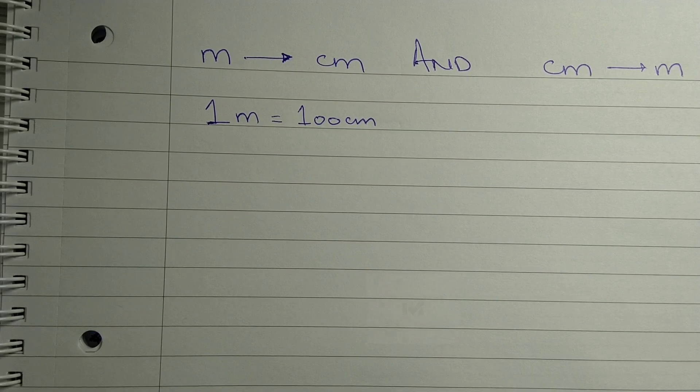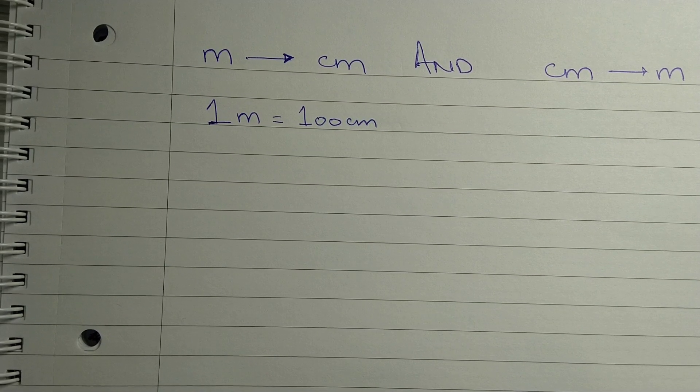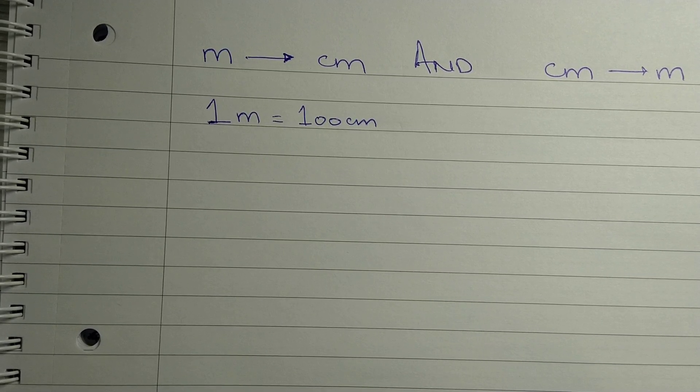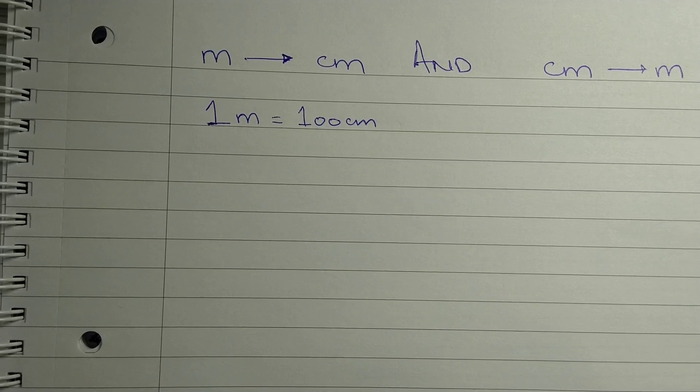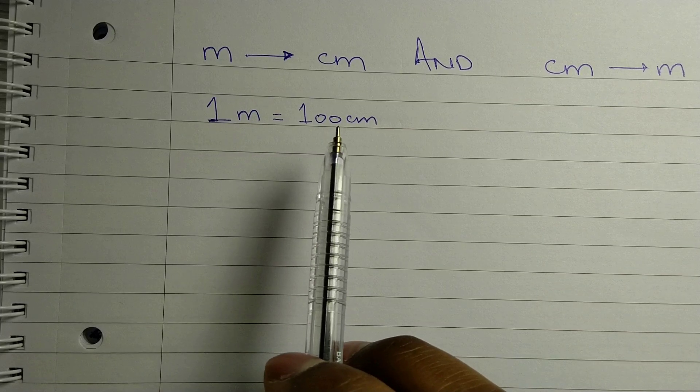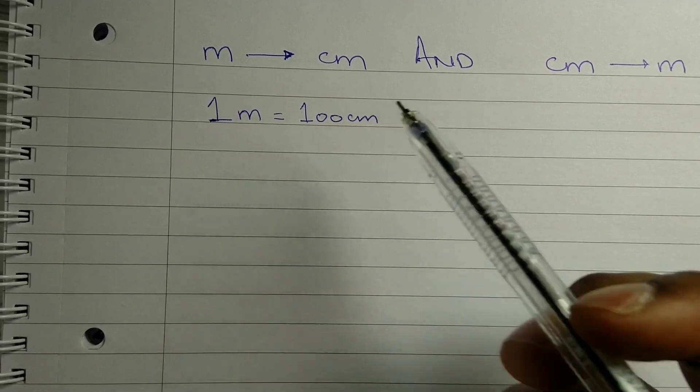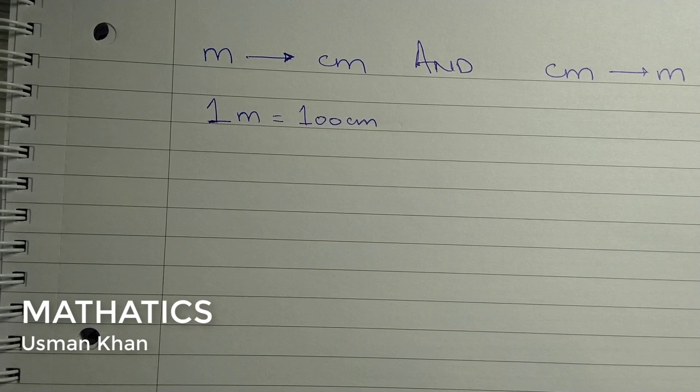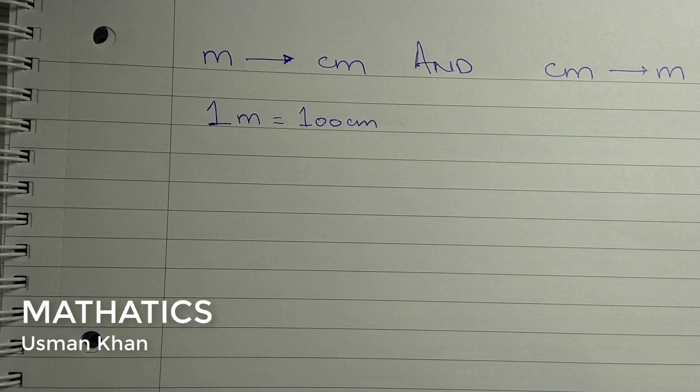To convert between any two units, you only need to remember the basic relation that exists between them. Between meters and centimeters, we only need to remember that one meter equals 100 centimeters. As long as we remember this relation, we can convert any given value between these two units.